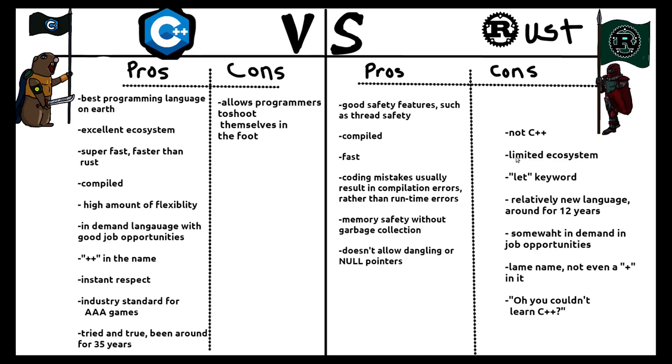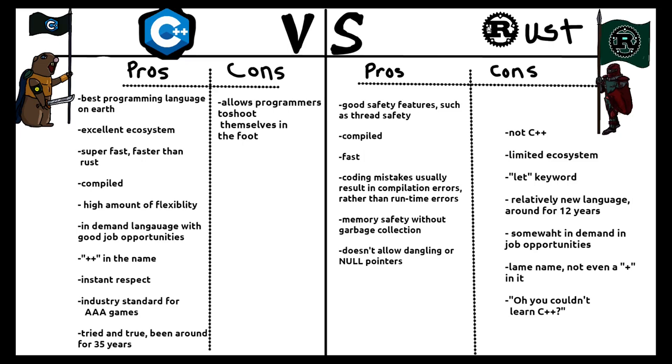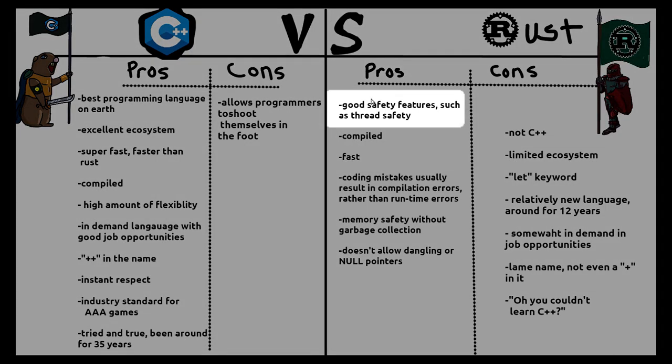Rust, on the other hand, has a somewhat limited ecosystem, due to it being a relatively new language — it's been around for about 10 years. That's not to say there are no libraries out there for Rust, but it does have a limited ecosystem. In a couple of years I could see that balancing out to where Rust and C++ would be about equal for the number of libraries they have.